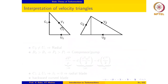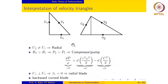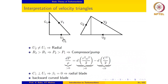Here we are given two velocity triangles, one at the inlet to the rotor and one at the exit to the rotor. We notice right away that U2 is not equal to U1, so the blade speed actually increases from inlet to the exit of the rotor, which implies that the machine is a radial flow machine. Furthermore, since U2 is greater than U1, it follows that R2 is greater than R1, so the machine is actually a radial outflow machine.